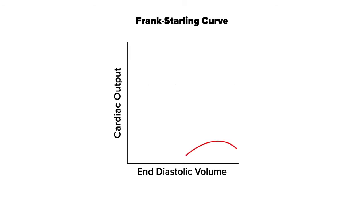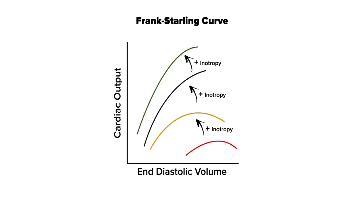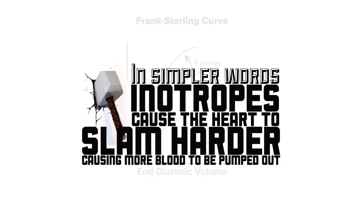Now back to cardiac output. When our heart can't do this adequately by itself, this is when we use medications. What inotropes do is cause an increase in cardiac output by affecting stroke volume. They cause an increase in cardiac contractility, or inotropy, which in turn causes increases in the ejection fraction, leading to more cardiac output. In simpler words, inotropes cause the heart to slam harder, causing more blood to be pumped out.